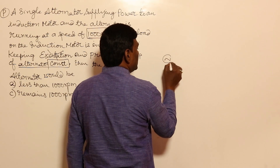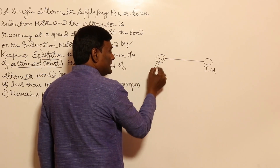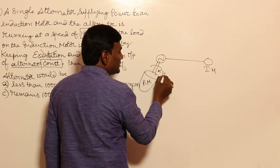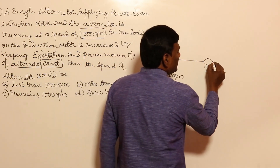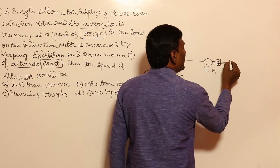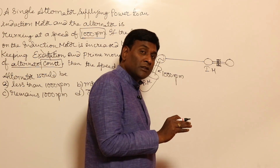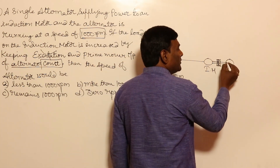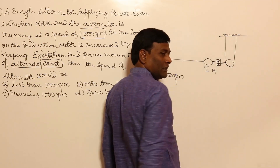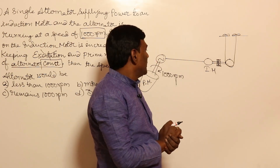This is the alternator, connected electrically to the induction motor. The alternator is being rotated by a prime mover whose power input is constant. It is rotating at 1000 rpm at the start. The induction motor is mechanically coupled to the load. Whatever tries to stop the rotation of the motor is the load. Think of it as a brake drum connected with a belt.